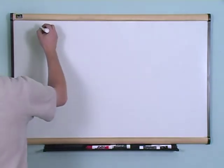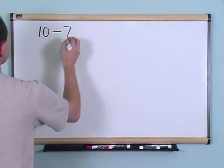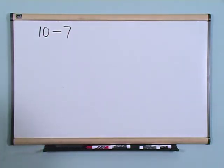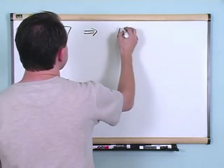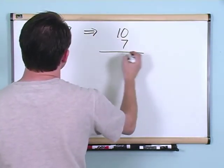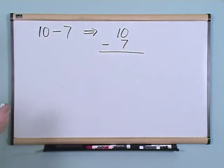What if you had ten minus seven? Ten minus seven, okay? Well, first thing we want to do is we want to write numbers on top of each other, just like before, and we're going to put a subtraction sign, okay?